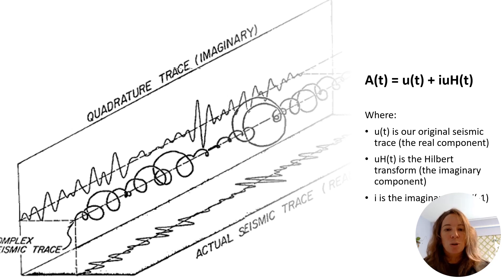For any seismic trace u(t), we create a Hilbert transform uH(t), which acts as a quadrature component, essentially creating a companion trace shifted by a quarter of a period. Together they form what we call the analytic trace, A(t).